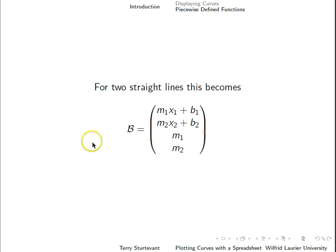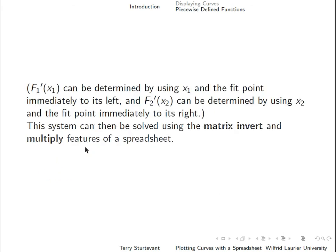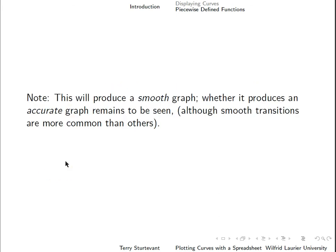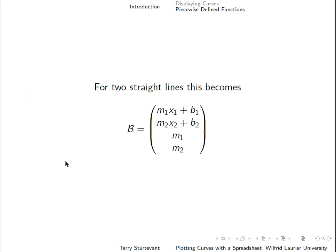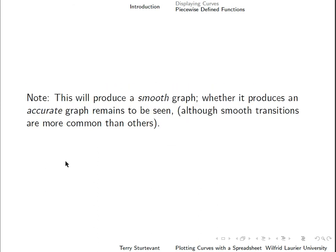So the solution we get is like that. So this will produce a smooth graph. Whether that curve in between those lines is actually what the data actually do in there is a different question.